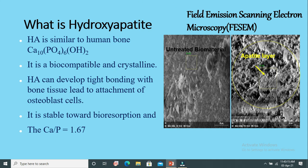Hydroxyapatite is stable but also susceptible to bioresorption, meaning it can easily form bonds and degrade on exposure to body fluid. The calcium-to-phosphate (Ca/P) ratio of hydroxyapatite, similar to human bone, is 1.67 — calculated as 10 divided by 6. Using field emission scanning electron microscopy (FESEM), we can see that untreated biomaterial before immersion in SBF shows no apatite growth, whereas after immersion in SBF for a specific period, apatite growth takes place.